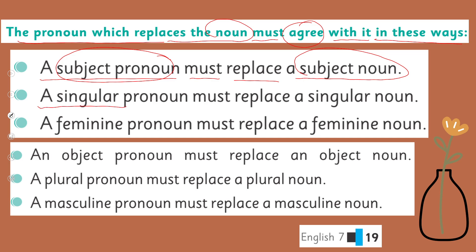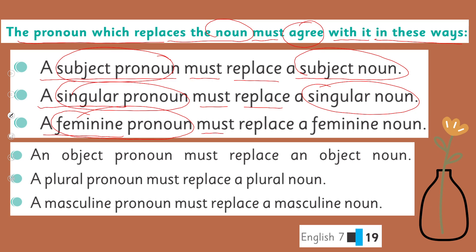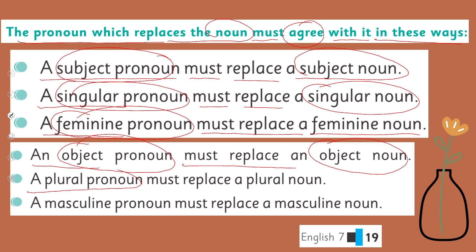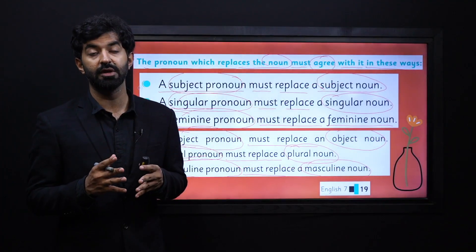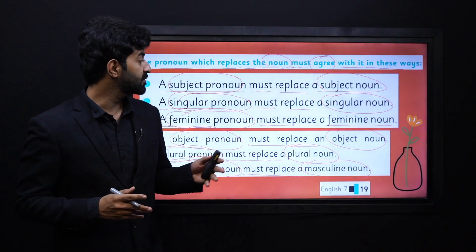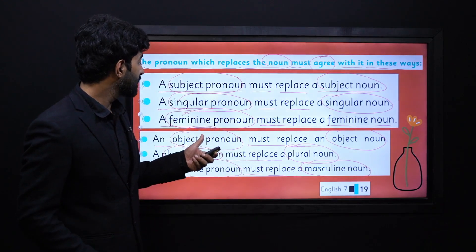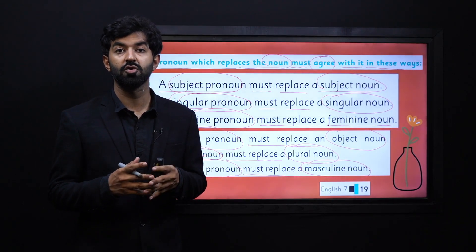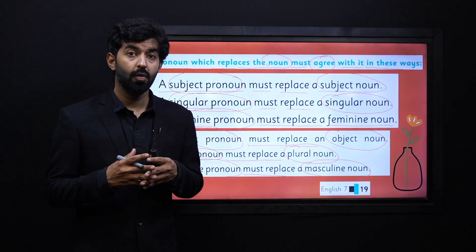A singular pronoun must replace a singular noun. A feminine pronoun must replace a feminine noun. An object pronoun must replace an object noun. A plural pronoun must replace a plural noun. And a masculine pronoun must replace a masculine noun. My dear learners, these are the rules that we need to follow in every situation — whether it's for a subject pronoun, singular, feminine, object, masculine, or plural. They must all agree with the antecedent.